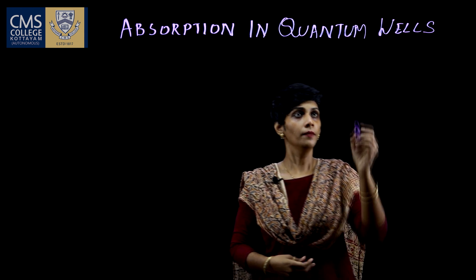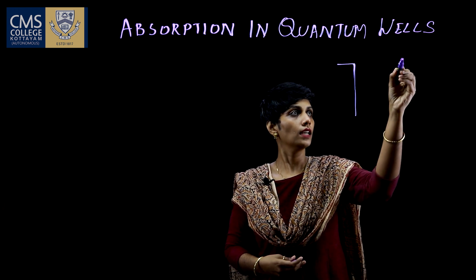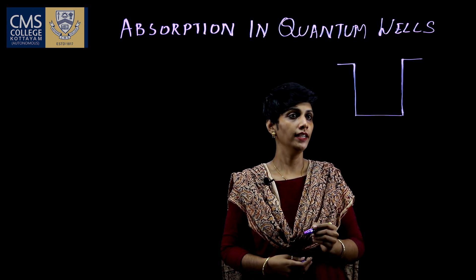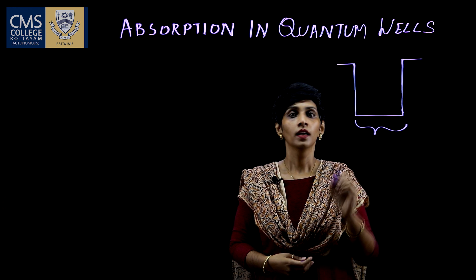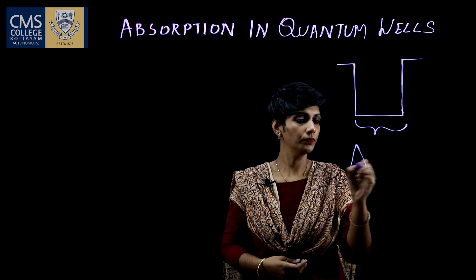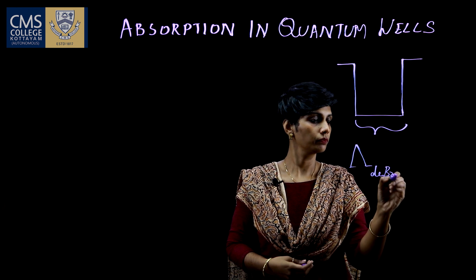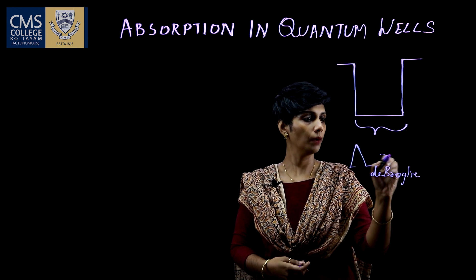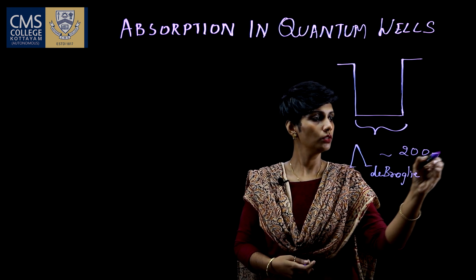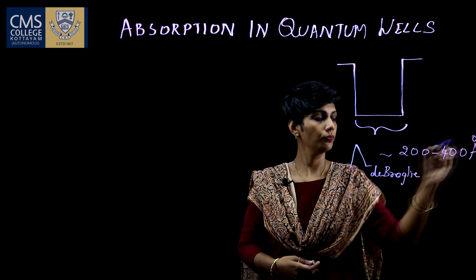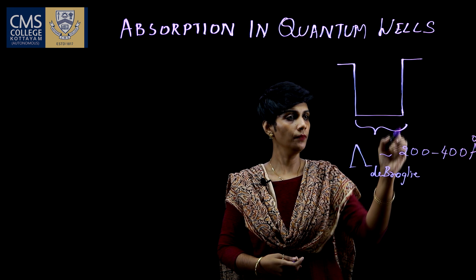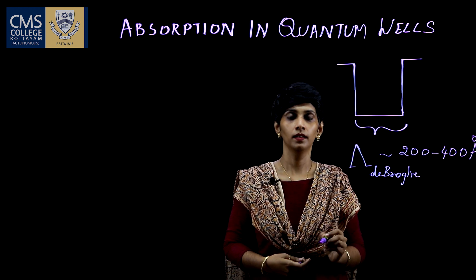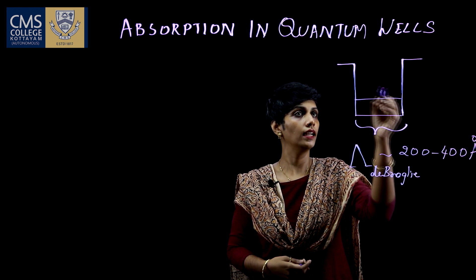A quantum well is nothing but a potential well in which carriers are confined in two dimensions. The effect of quantum confinement takes place when the thickness of this potential well becomes comparable to the de Broglie wavelength. The de Broglie wavelength for semiconductors ranges from 200 to 400 angstrom. When the thickness of this potential well becomes less than this range, quantum size effects take place and we have discrete energy levels.